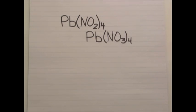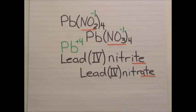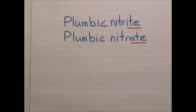How would you name these two? You've got lead involved with both, but Pb with an NO2 times 4, and you've got PbNO3 with 4 of them as well. So you know that lead has to be plus 4 because nitrite and nitrate are both negative 1 charge, and there's 4 of them. So the names in the stock system would be lead 4 nitrite, lead 4 nitrate, or plumbic nitrite and plumbic nitrate.